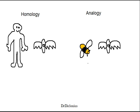Analogy is something that arises as a result of convergent evolution — two different lineages that converge on a similar trait. For instance, the wing of a bee and the wing of a bat. A bat is a mammal and a bee is an insect, but they both have wings that function for flight. However, these are analogous structures because they do not share a common ancestor.